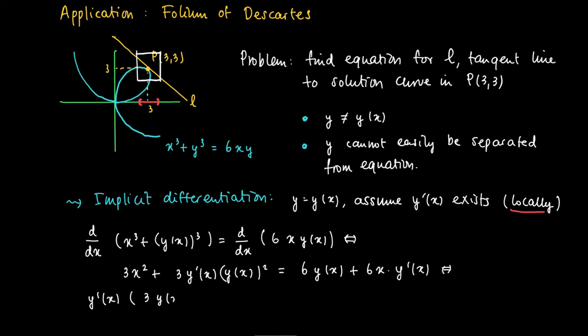Now, the typical thing is that we always can gather all terms with y prime in a linear fashion. So we put all the terms with y prime on the left-hand side. So we get y prime times 3 times y squared minus 6x equals... And the other terms move to the right, 6 times y minus 3x squared.